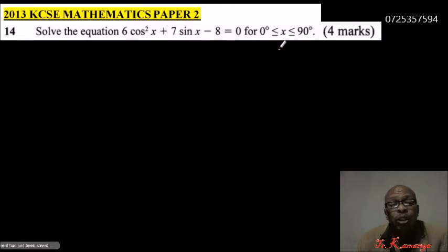This is from the topic trigonometry 3 which you did in form 4. For us to be able to solve this, we need to express our equation with one term. You can see here we have cos²x and here we have sin x, so we need to change either to cosine or sine.